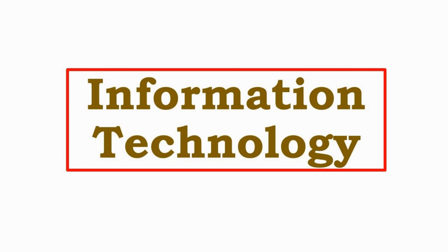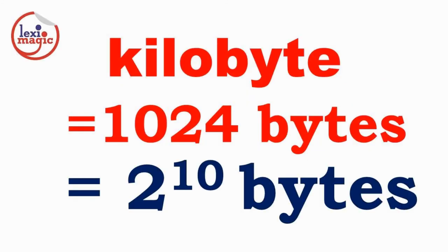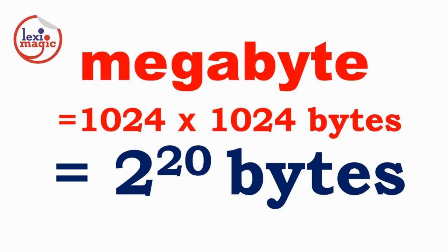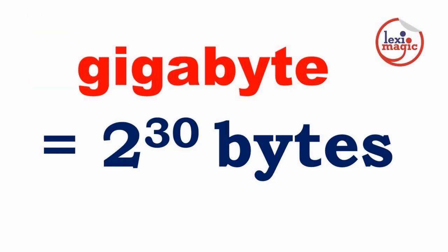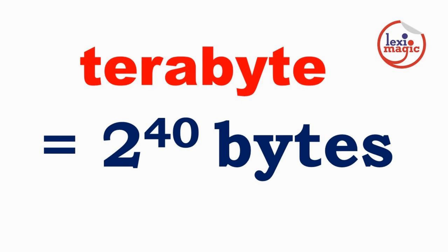In information technology, some of these prefixes are used with a slightly different meaning. A kilobyte is not 1000 bytes, but 1024 bytes, which equals 2 raised to the power of 10. A megabyte equals 2 raised to the power of 20 bytes. A gigabyte equals 2 raised to the power of 30 bytes. A terabyte includes 2 raised to the power of 40 bytes.